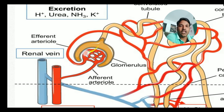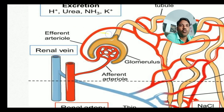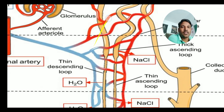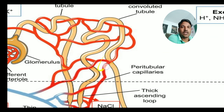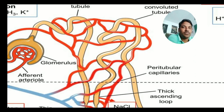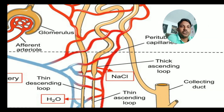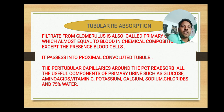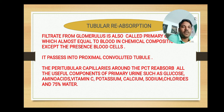You can see here that the afferent arteriole coming out is moving along with the tubular part, going in contact with it — this is to reabsorb from the primary urine which is passing through the tubular part: PCT, loop of Henle, and DCT. That is the second step, reabsorption. What was reabsorbed: glucose, amino acids, vitamin C, potassium, calcium, sodium, chlorides, and 75% of the water — all substances required by our body.